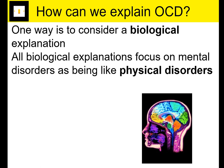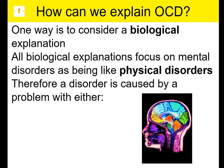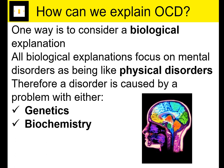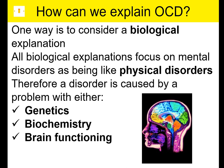You can see there's a picture of the brain — the idea being that it's something you can actually see. A disorder, according to this biological explanation, is either caused by a problem with genetics, which is something to do with inheritance passed down through genes; biochemistry, which is something to do with chemicals in your body, whether that is neurotransmitters, hormones, or brain functioning. I'm going to run through these three biological explanations. You don't necessarily have to know all three, but if you're going for an A star, I would make sure you know all three.